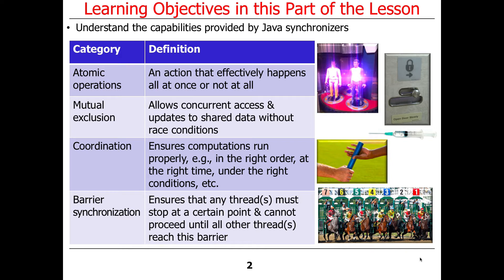There's a whole pile of synchronizers in Java. We have so-called atomic actions that take place atomically or not. We have mutual exclusion that allows you to serialize access to some shared resource. We have coordination mechanisms that ensure computations run in the right order at the right time and under the right conditions. And there's barrier synchronization that waits until everybody is in a certain state — a gang scheduling-like manner.